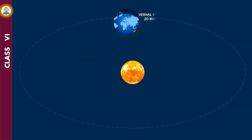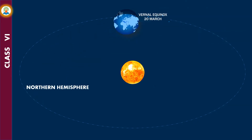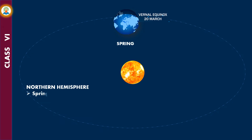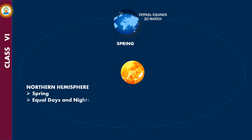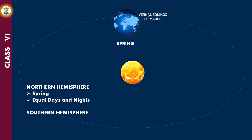On 21st March, the Sun shines vertically over the equator. Therefore, all places on Earth have equal days and nights. The Northern Hemisphere has spring while the Southern Hemisphere has autumn.